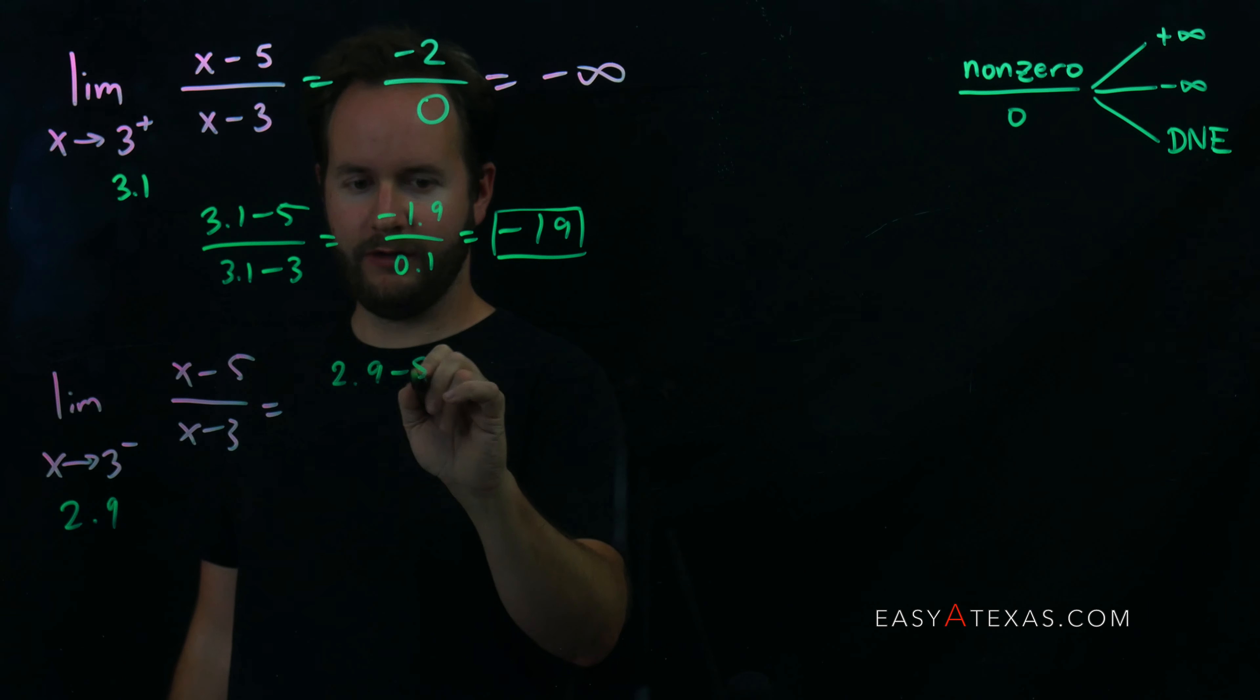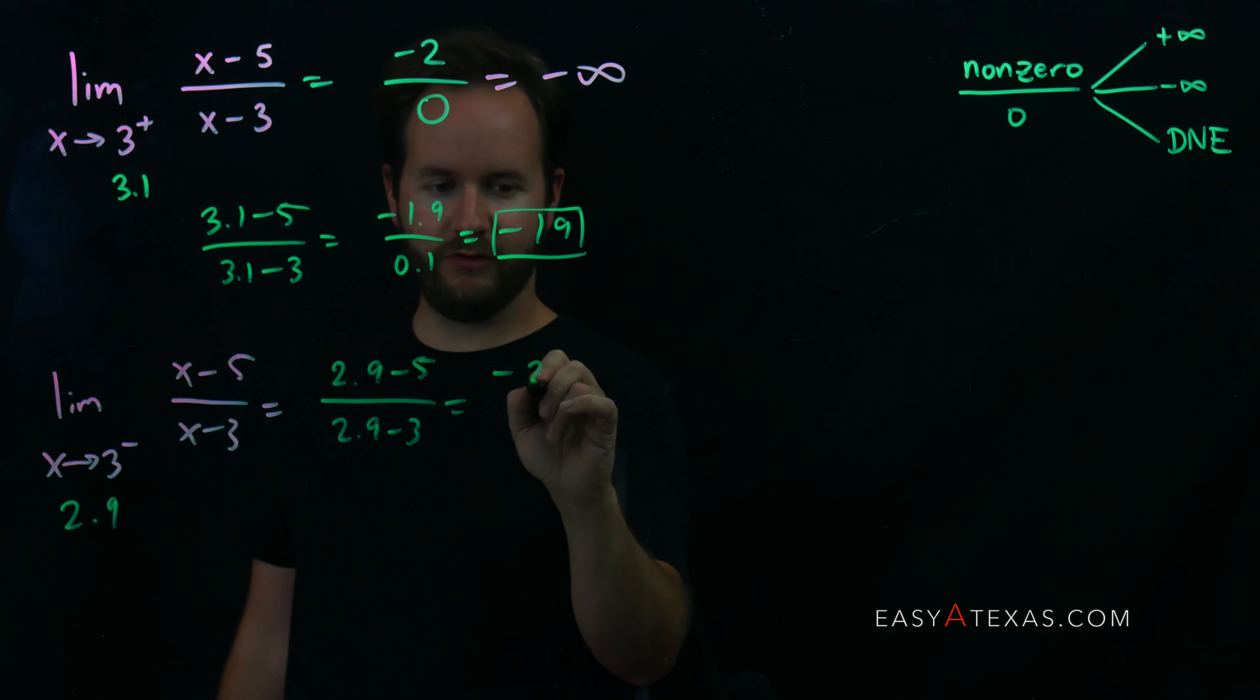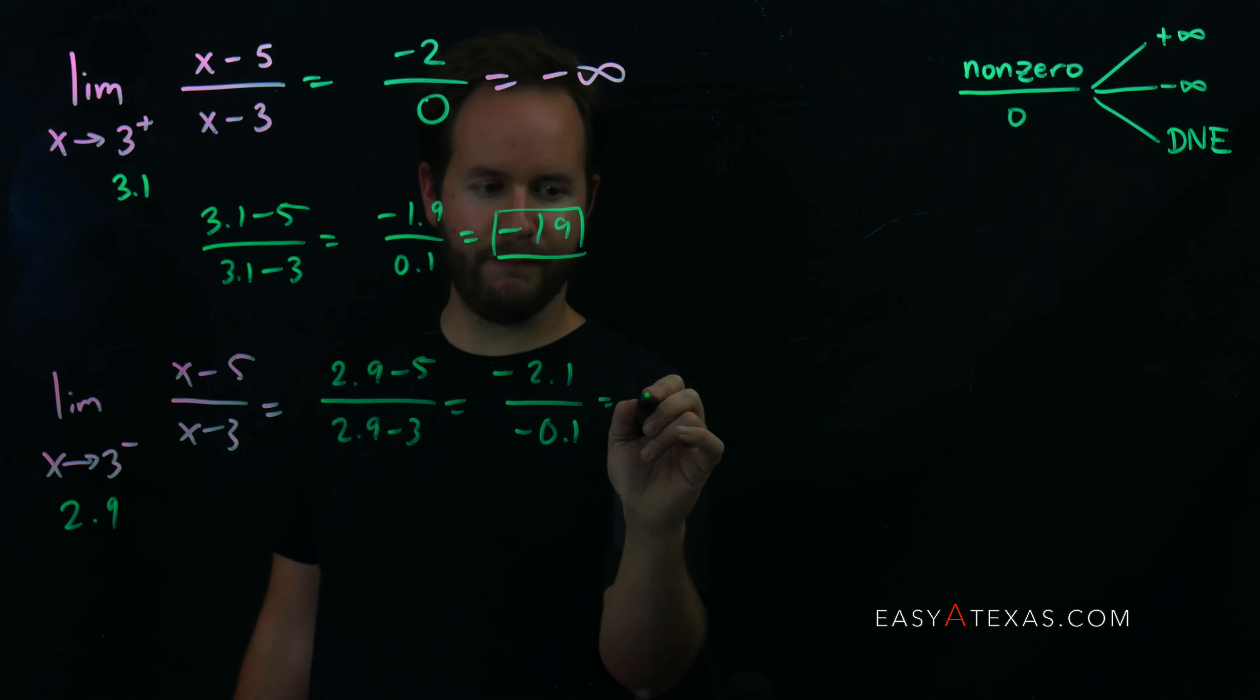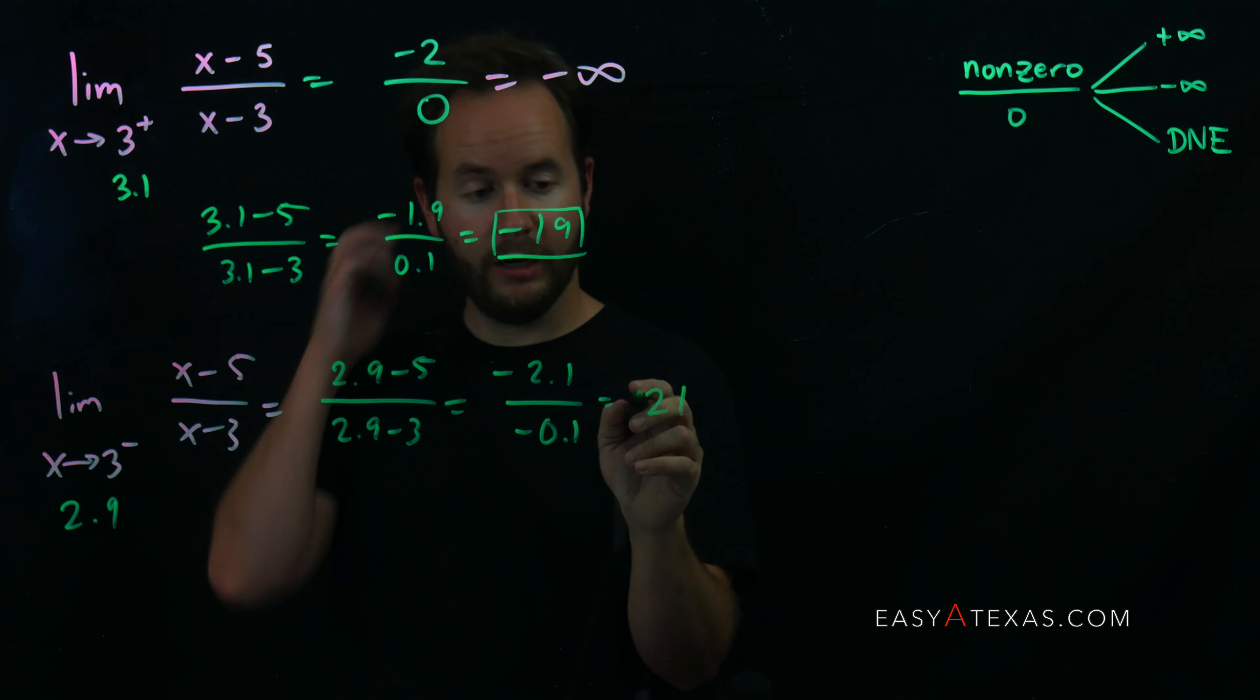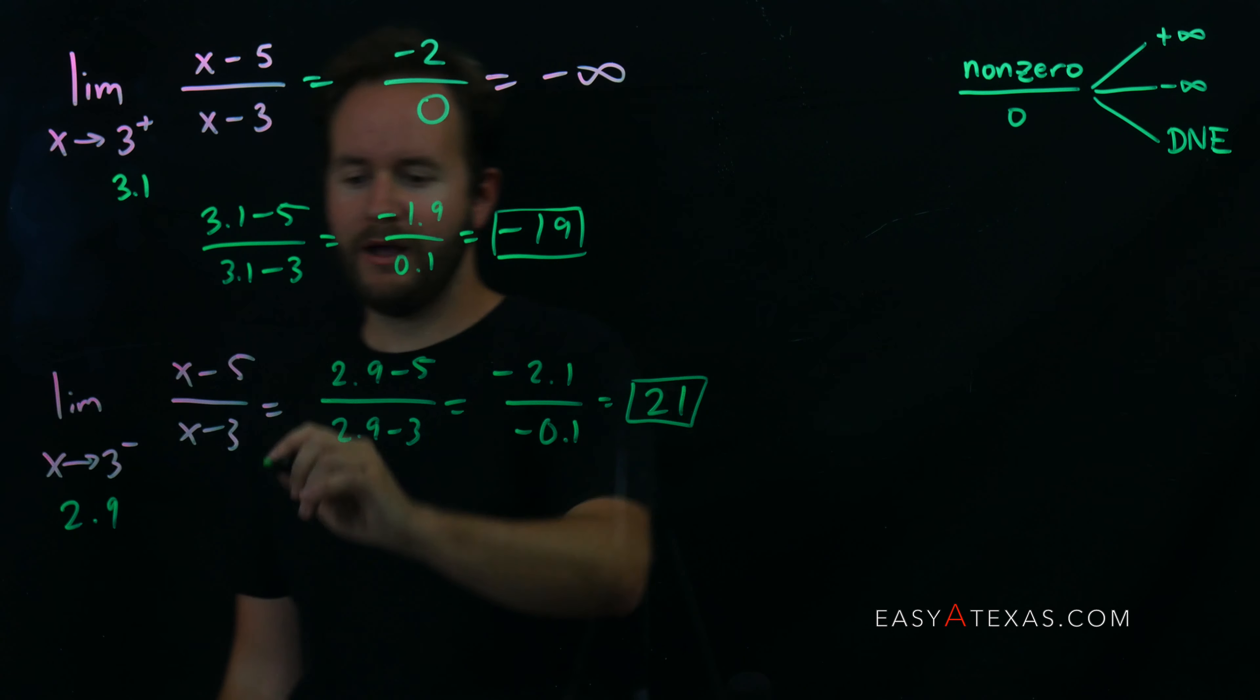We'll get 2.9 minus 5 over 2.9 minus 3. This is negative 2.1 over negative 0.1, which is going to give me positive 21. Now, because my result is positive this time, this limit's actually going to be positive infinity.